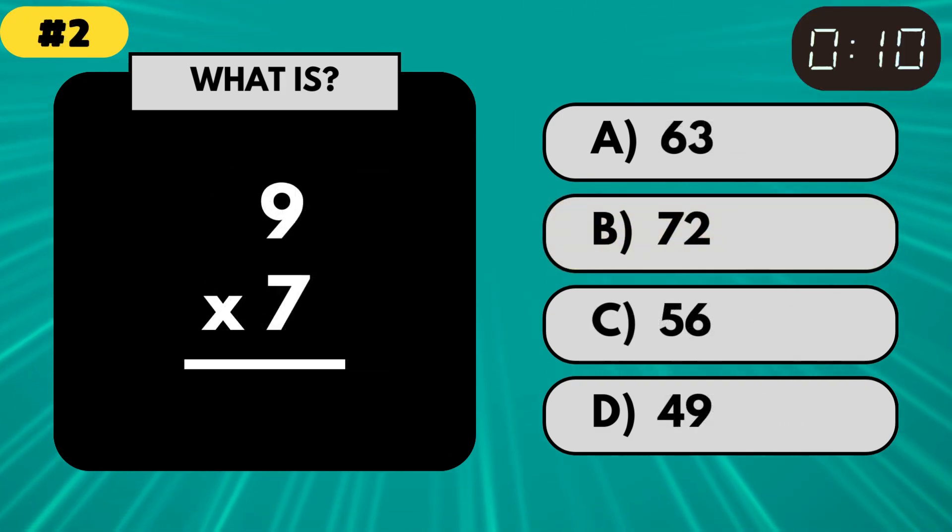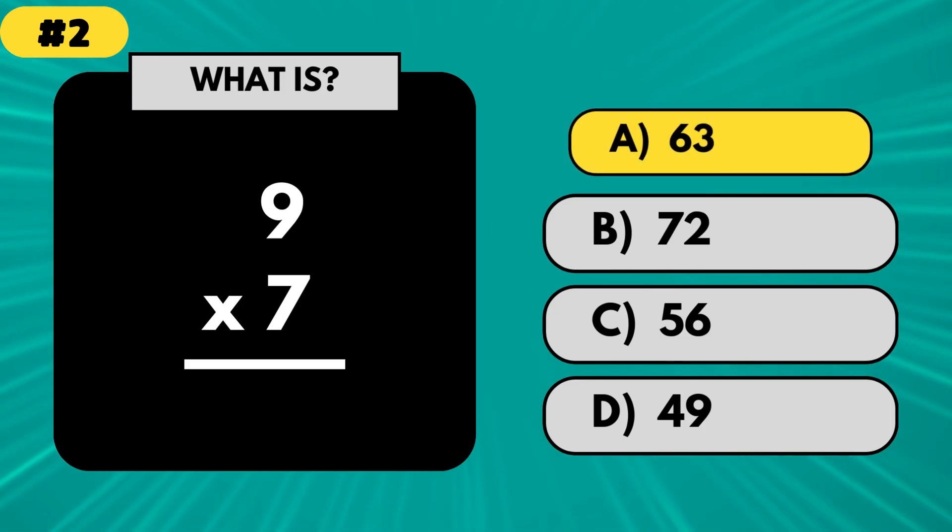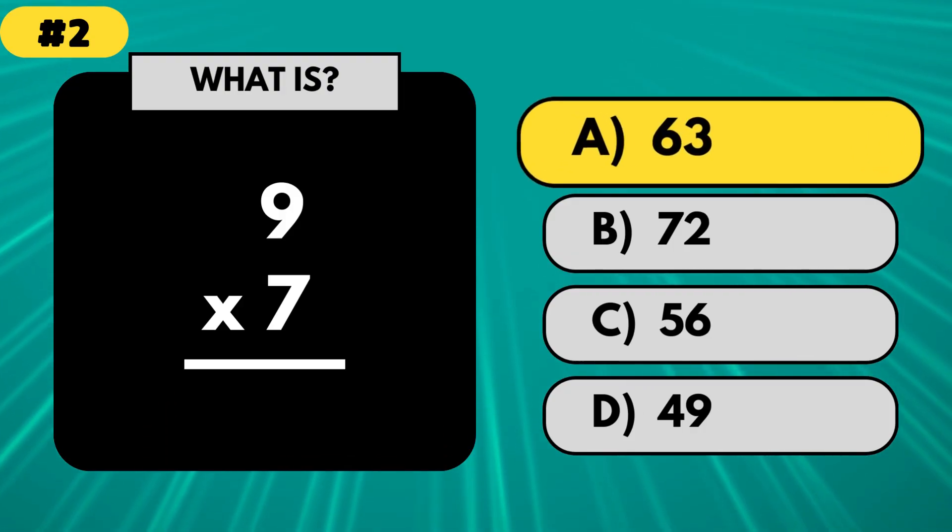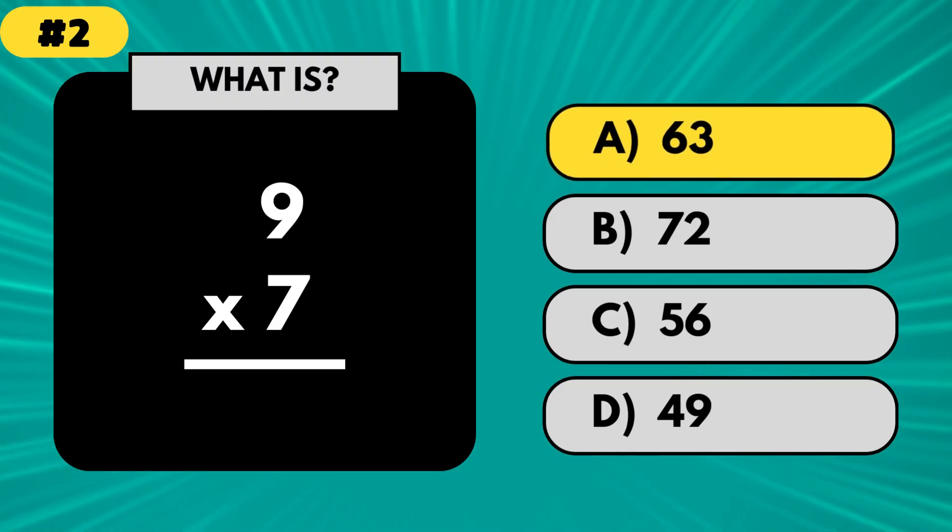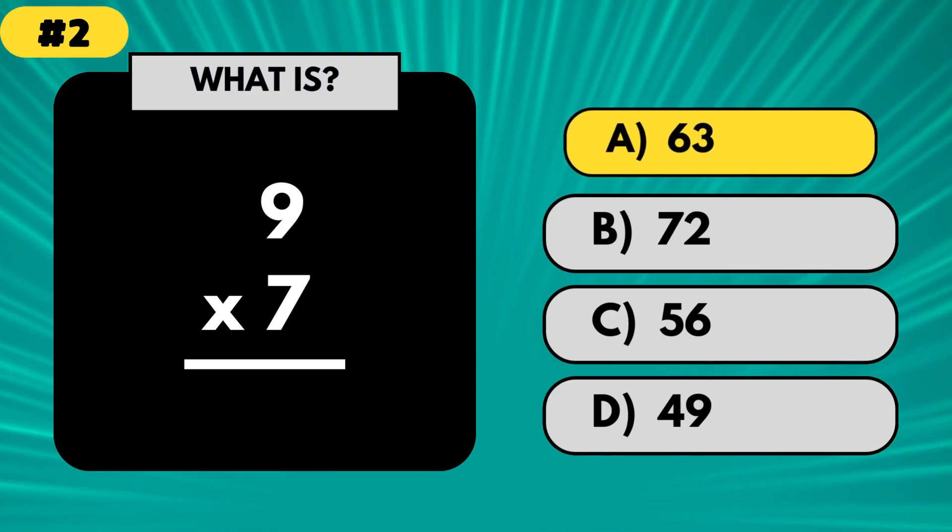What is 9 times 7? The answer is 63. If you got that right, congrats! You officially know more than 90% of adults who panicked on this one.